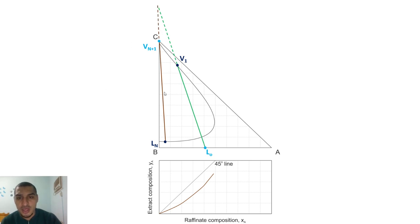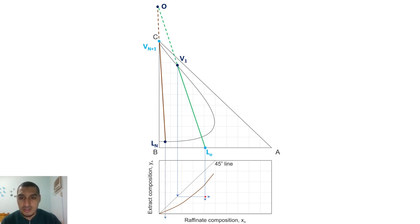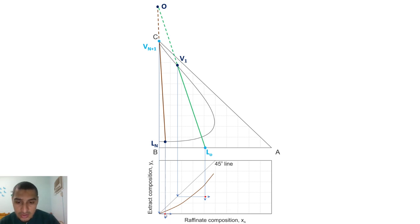For the operating line, it is drawn the same way. The operating lines on the ternary diagram pass through point O and connect the extract and raffinate terminal points. The starting point and ending point each have an X and a Y: the X goes straight down and the Y is reflected on the 45-degree line. For a pure solvent, the Y reflects to zero, so the point falls on the X axis at the origin.